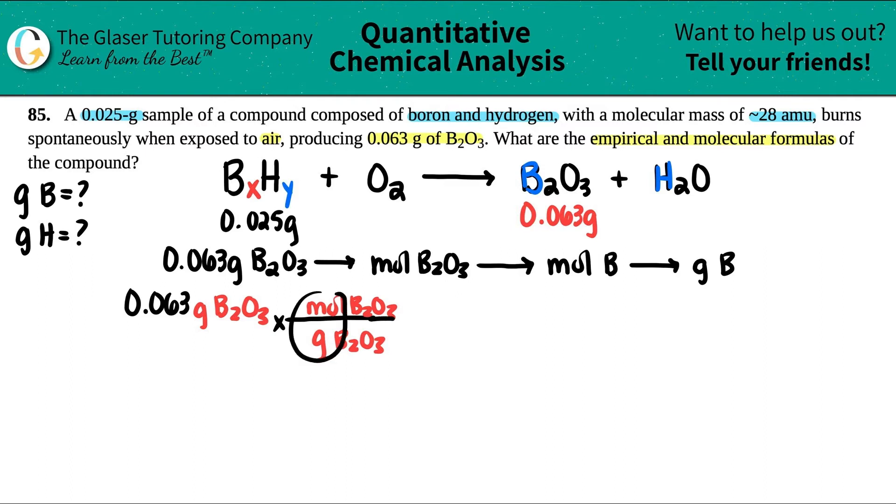Mole to gram ratio of the same compound is always the periodic table. So when you're using the periodic table, it's always one mole, and then go on the periodic table, get that molar mass. I got two borons, so two times 10.81 plus three oxygens, three times 16. So I get 69.62. Cancel these out.